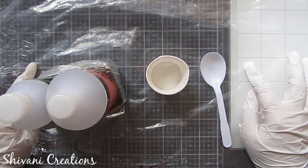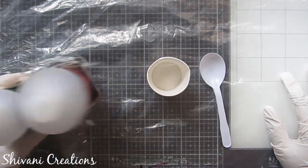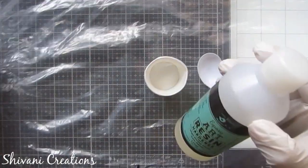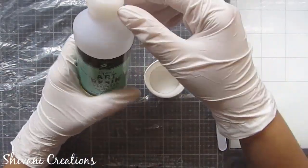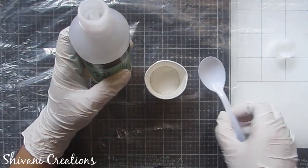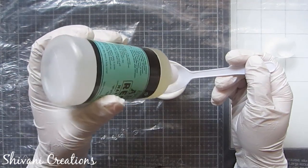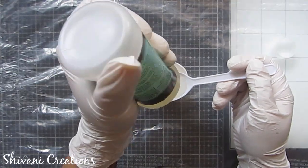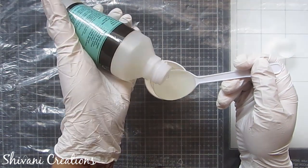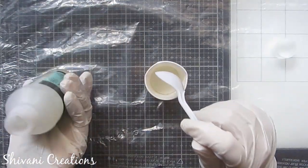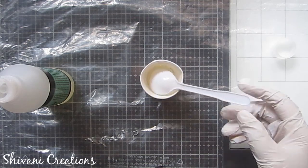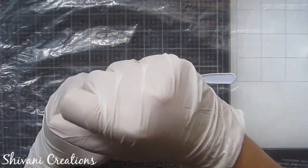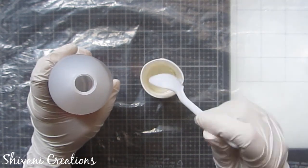Before starting with the resin you must cover your surface with any plastic sheet or plastic bag. Then I am taking the hardener first, so you need to pour the hardener. The ratio of this resin is 1:2, that is one part hardener and two parts resin. So here I am taking my plastic teaspoon and just pouring one teaspoon of hardener. Since I am making keychains so we need very less resin, but if you are making coasters or big projects you have to take more. Now I am taking the clear resin and we need to pour two teaspoons of the clear resin.